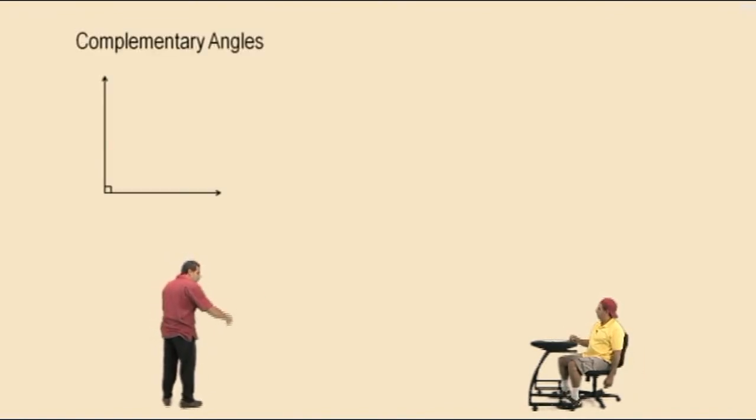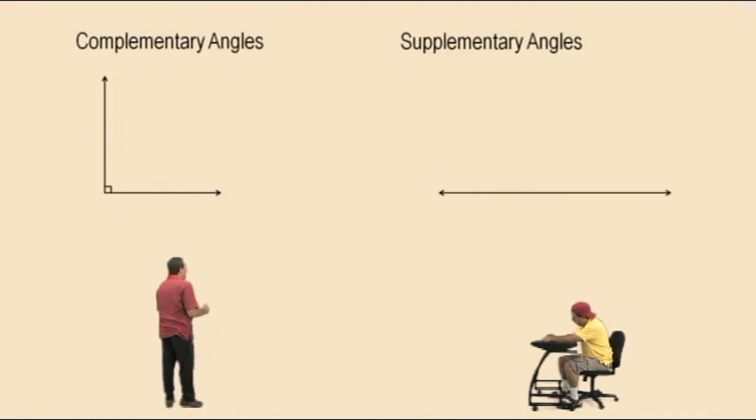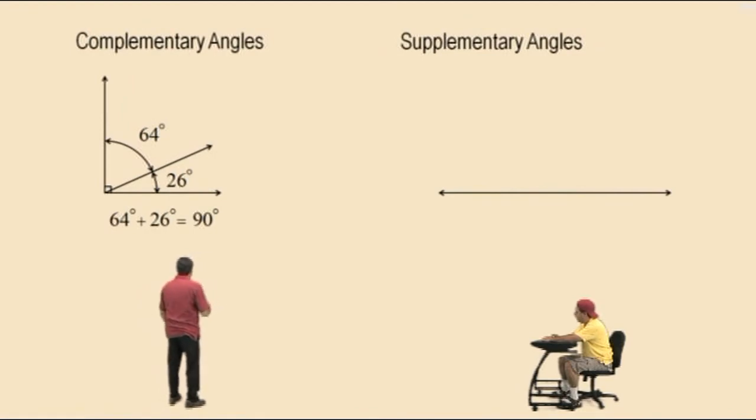Let's begin with complementary angles and supplementary angles. Complementary angles, Charlie, are angles that sum to 90 degrees. So if one angle is 26 degrees, the other angle must be 64 degrees because their sum will equal 90 degrees. We say the sum forms what we call a right angle, which is 90 degrees and that's why that little box is in the corner.